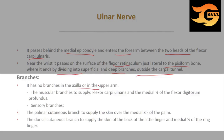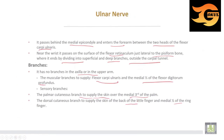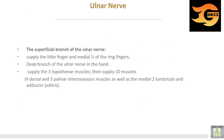The ulnar nerve has no branches in the axilla or upper arm. Muscular branches in the forearm supply flexor carpi ulnaris and the medial half of flexor digitorum profundus. Sensory branches include: a palmar cutaneous branch supplying the skin of the medial third of the palm, and a dorsal cutaneous branch supplying the skin on the back of the little finger and the medial half of the ring finger. The superficial branch supplies the little finger and medial half of the ring finger. The deep branch in the hand supplies the three hypothenar muscles, thenar muscles, four dorsal interossei, three palmar interossei, the medial two lumbricals, and adductor pollicis muscle.